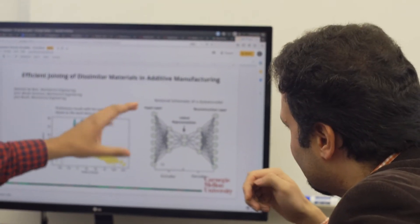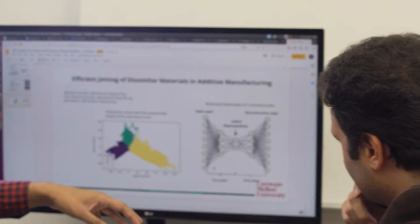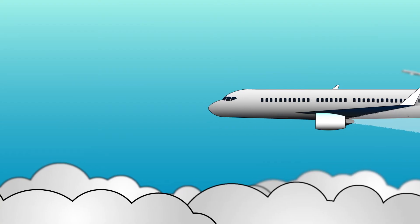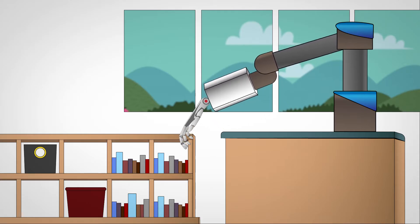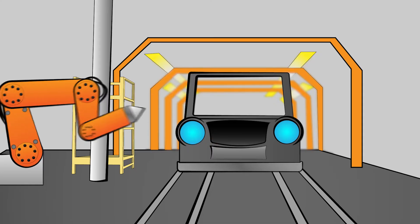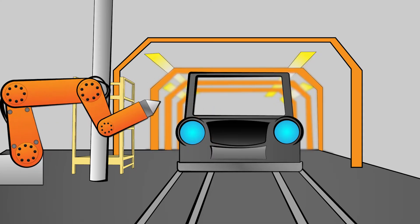Metal additive manufacturing is a new and disruptive technology that tries to manufacture parts with complex geometries and with a reduced amount of materials. Specifically, metal additive manufacturing is very good at manufacturing specific alloys in specific industries. There are a huge number of applications in aerospace, biomedical engineering, and automotive industries.